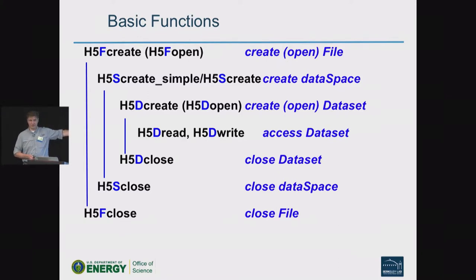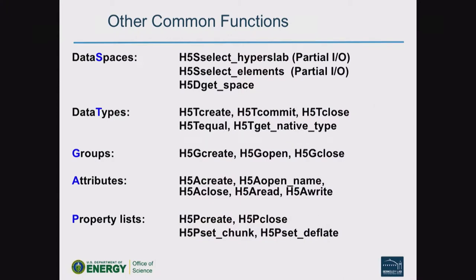If you're dealing with data spaces, you'll eventually want to do selections to write out part of a dataset or read from one. You need to query the data space from disk to get dimensionality. For data types, use the T routines to create new ones like a struct or array type if nothing predefined fits. Groups are straightforward to create, open, and close. Data sets you create, read, and write. Properties — the P routines — are where the main action is if you want to twist a knob, such as chunking or the deflate compression.